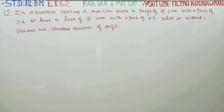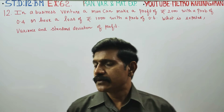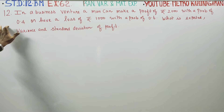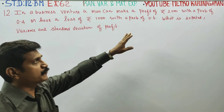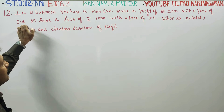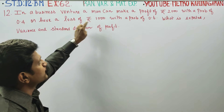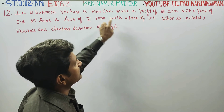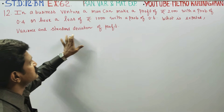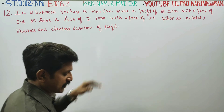Dear 12th standard students, in exercise number 6.2, sum number 12: In a business venture, a man can make a profit of rupees 2000 with a probability of 0.4 and have a loss of rupees 1000 with a probability of 0.6. What is the expected value, variance, and standard deviation of the profit?